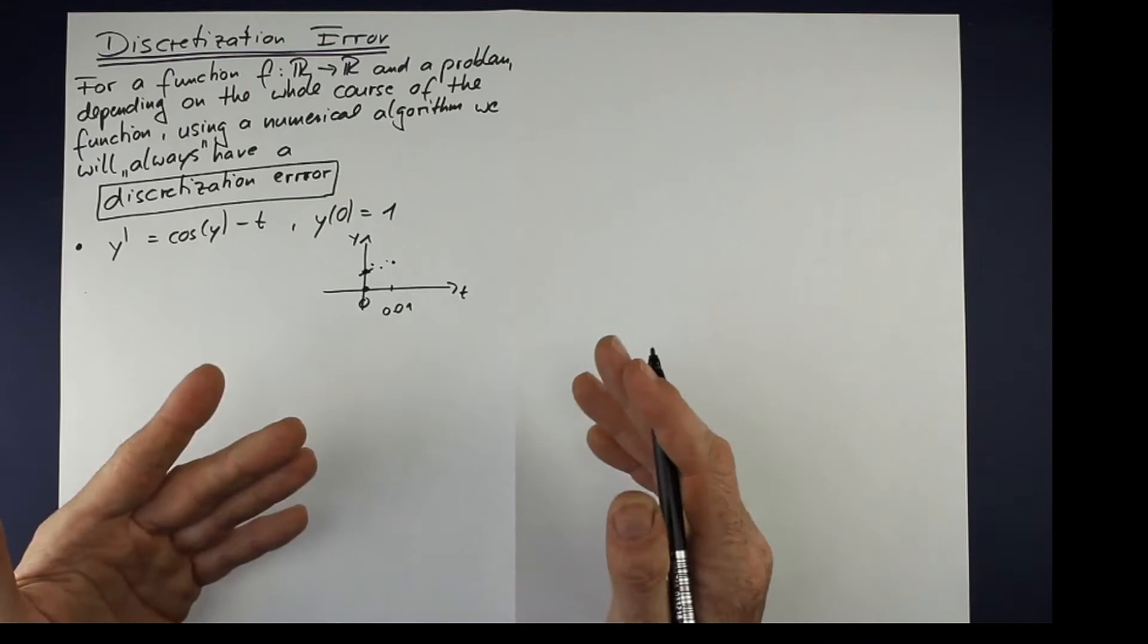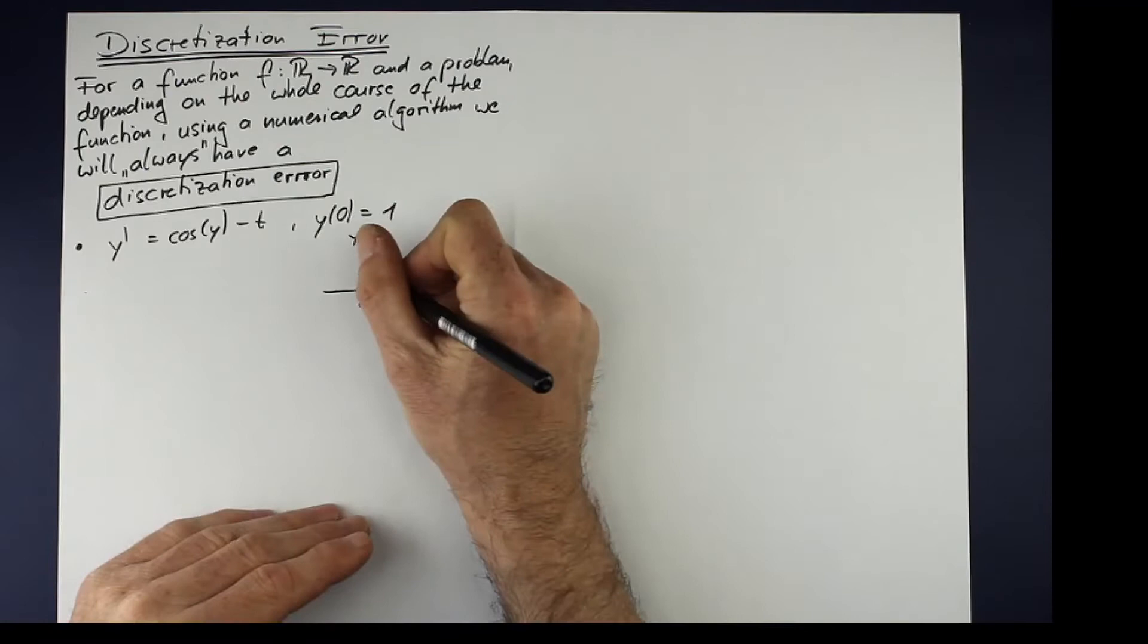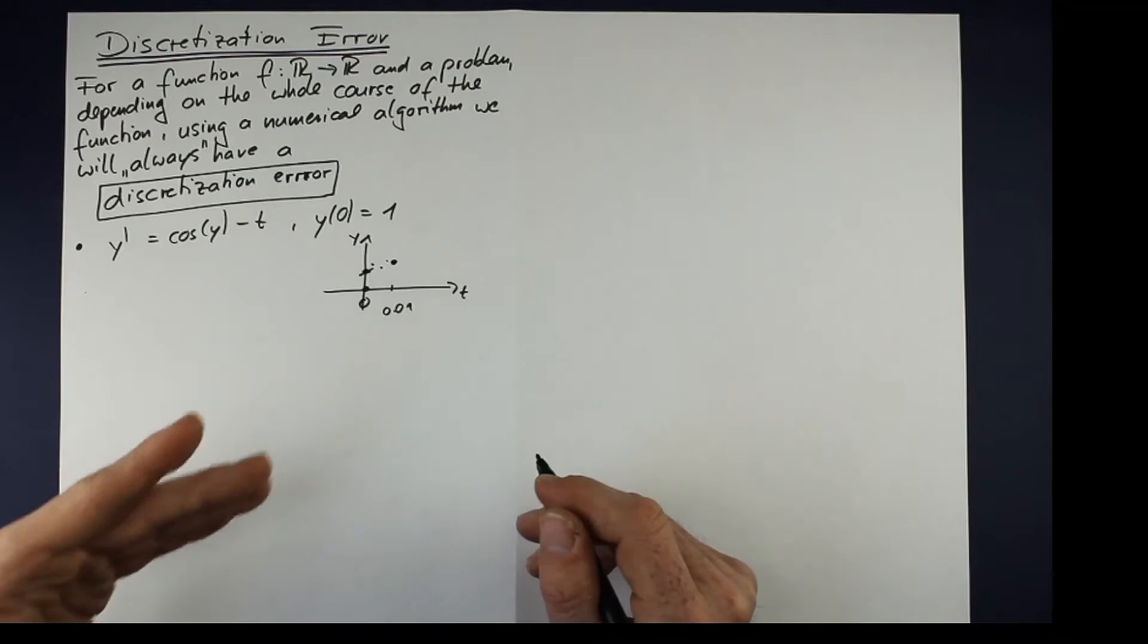In this case, it's the Runge-Kutta method. And then having the slopes here at these points, then we can estimate the average slope and then we can find that point. And in the end, what will the solution be like?